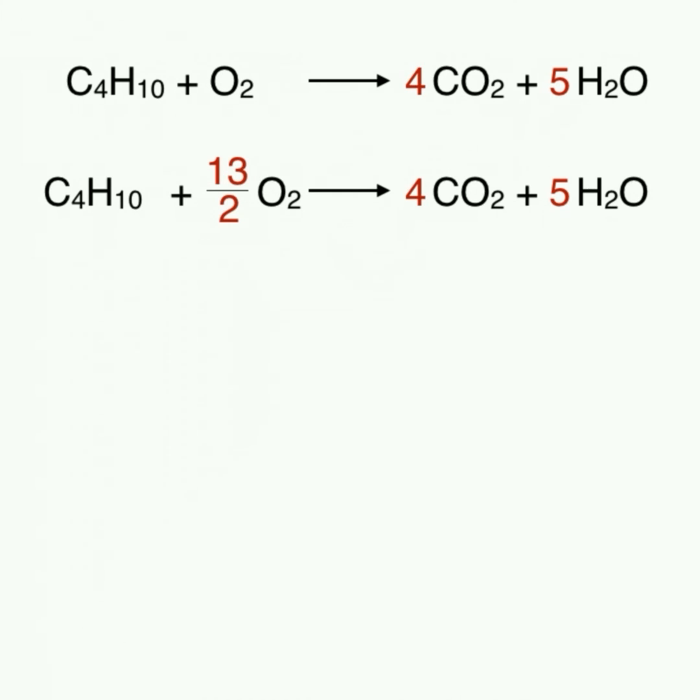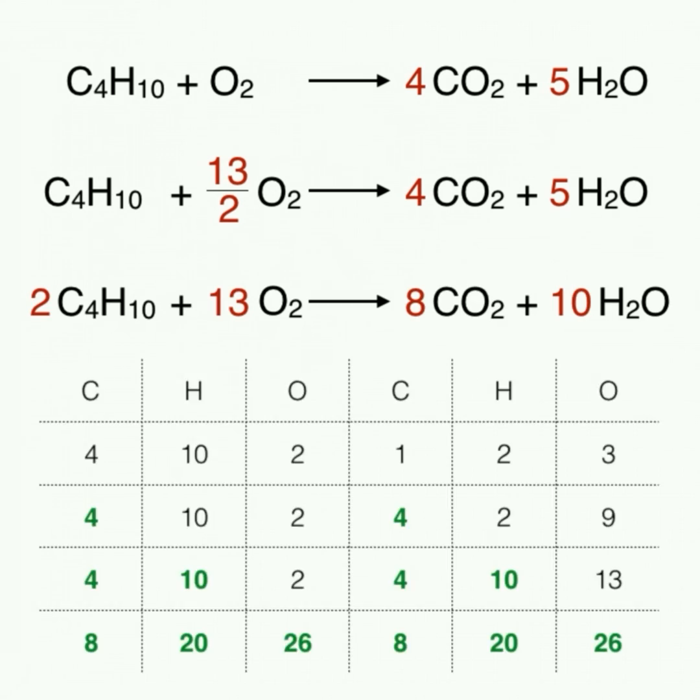So in order to cancel out the fraction, we must multiply everything in the equation by 2. After doing this, a final tally shows us that all elements in the equation are indeed balanced.